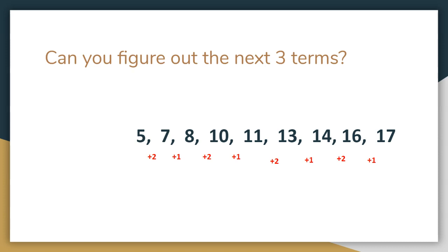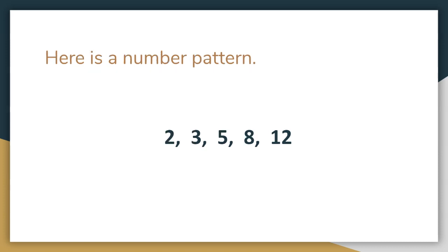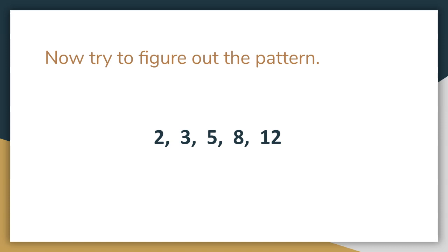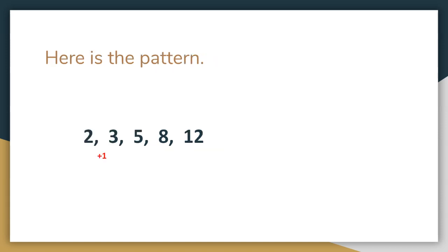Did you get them right? Here is another number pattern: 2, 3, 5, 8, 12. First of all, you should notice the numbers are all going up, so you notice again that it's a growing pattern. Now we've got to figure out what kind of pattern this is. We look at 2 and 3 — it's going up by 1, so between 2 and 3 is plus 1. Then we look at 3 and 5 — it's plus 2. So we know here's plus 1, here's plus 2. What happens next — is it plus 1 again or something else?